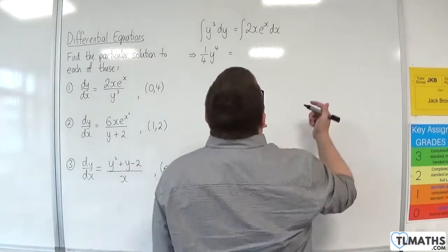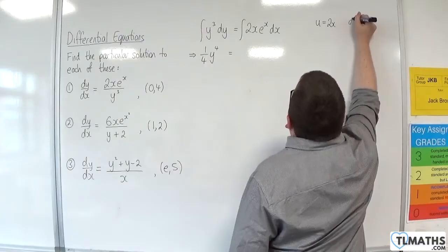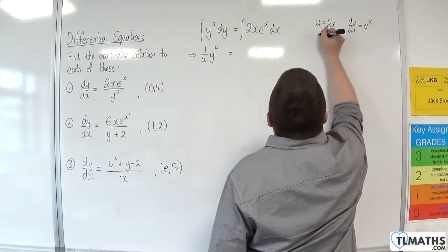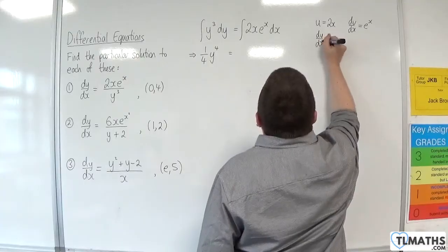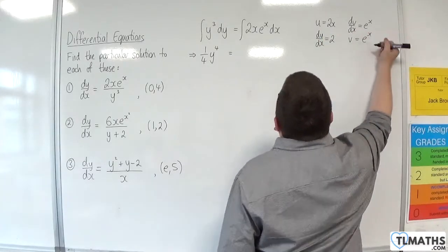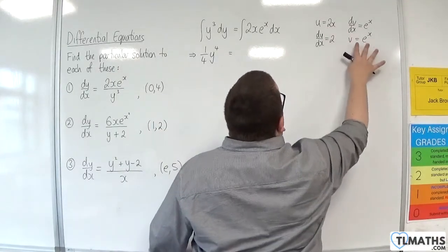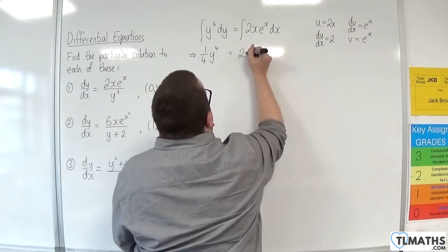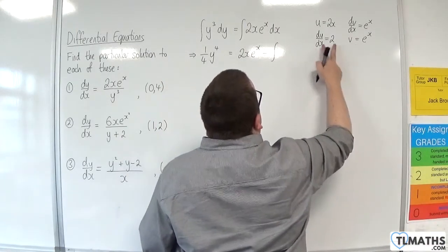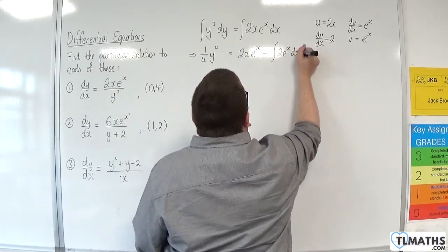So for integration by parts, we're going to let u be 2x and dv by dx be e to the x. So du by dx will be 2, and v will be e to the x. So this will give u times v, so 2x e to the x, take away the integral of v times du by dx, so 2e to the x dx.